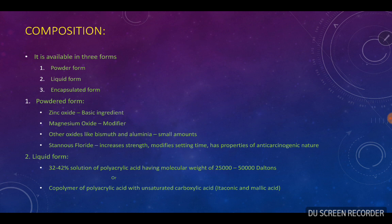Composition: it is available in three forms — powdered form, liquid form, and encapsulated form. The basic ingredient in the powdered form is zinc oxide, then magnesium oxide which acts as a modifier, and small amounts of other oxides like bismuth and aluminium. Small amounts of stannous fluoride are also added, which aids in increasing the strength, modifies the setting time, and has anti-carcinogenic properties. The liquid form is supplied as a 32–42% solution of polyacrylic acid with a molecular weight of 25,000 to 50,000 Daltons, or it is usually a co-polymer of polyacrylic acid along with other unsaturated carboxylic acids such as itaconic acid and malic acid.